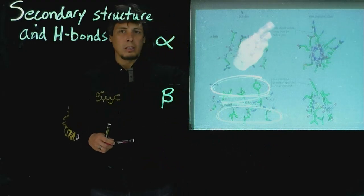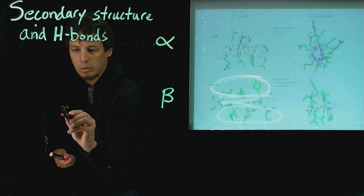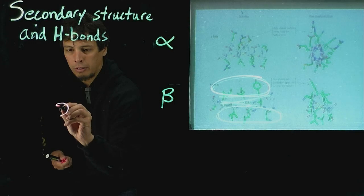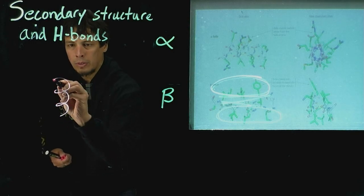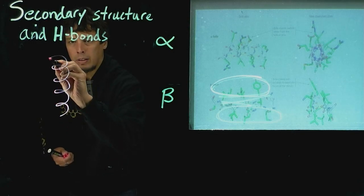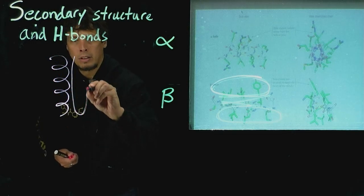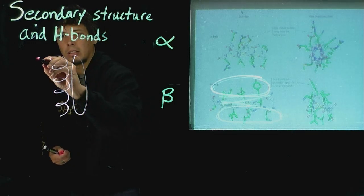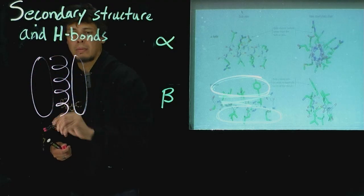The alpha helix can also have a face. It can also sort of orient itself so that the residues have faces. So you can think of a face on the right side of the helix and a face on the left side of the helix.